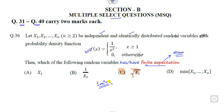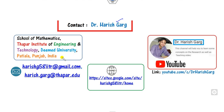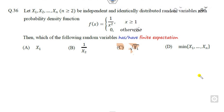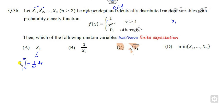Since the variables are IID, if the mean exists for X1 it exists for all Xi. To find the mean, we compute x times f(x). The domain is from 1 to infinity. For the first option, x times 1/x² integrates to log(x), and log of infinity is not defined, so this is not a finite expectation — not the right answer.